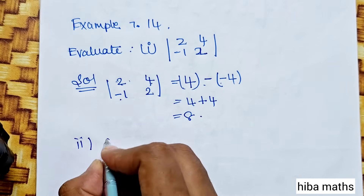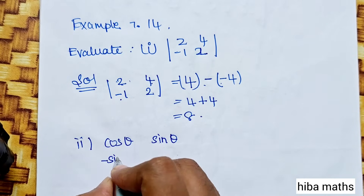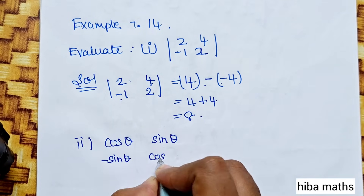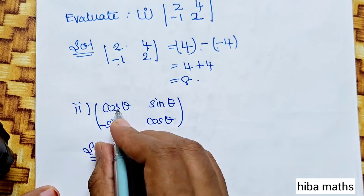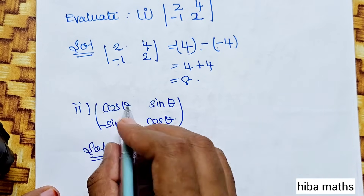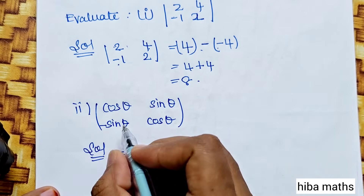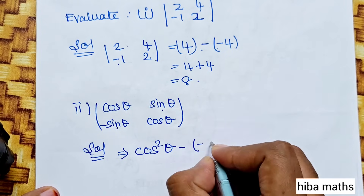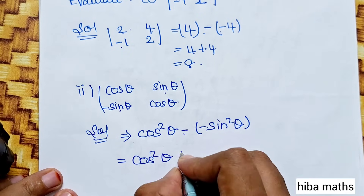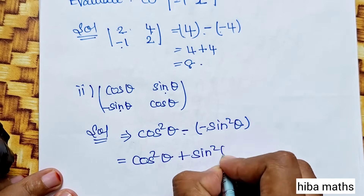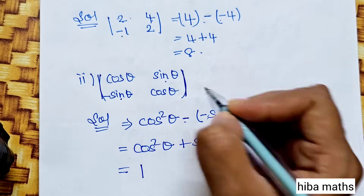Second subdivision: evaluate the determinant of [cos θ, sin θ; -sin θ, cos θ]. Diagonal multiply: cos θ times cos θ equals cos² θ, minus of (-sin θ times sin θ) equals plus sin² θ. Therefore cos² θ plus sin² θ equals 1. Answer: 1.